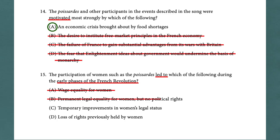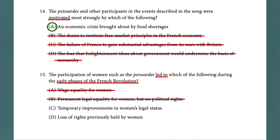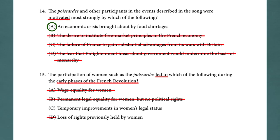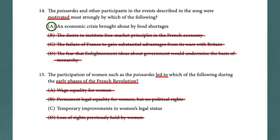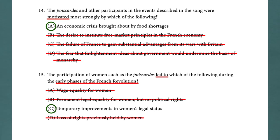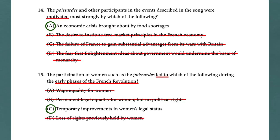Is it D: loss of rights previously held by women? No — during the liberal phase, women actually gained some rights. So the answer is C: temporary improvements in women's legal status. There's a regression of those rights under Napoleon, so it is temporary. The answer is C.